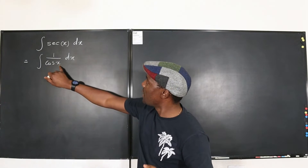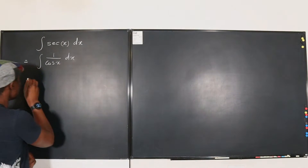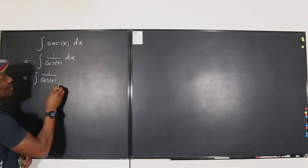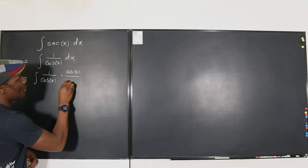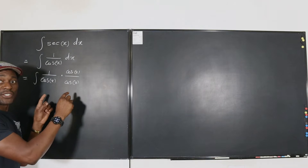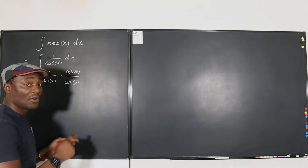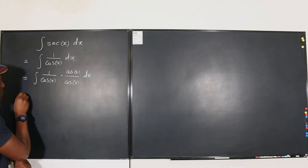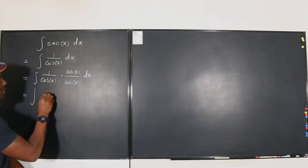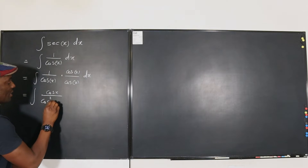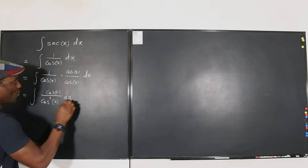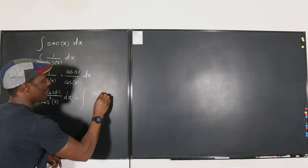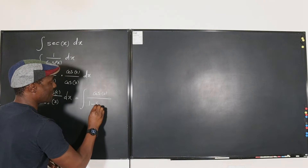What if we multiply the top and bottom by cosine x? So we write this as the integral of 1 over cosine x, multiplied by cosine x over cosine x. This is a trick in integration you might need to employ in other problems, especially involving trig. What you have here is the integral of cosine x over cosine squared x — and you know that cosine squared x is the same thing as 1 minus sine squared x. So we can write this as the integral of cosine x over 1 minus sine squared x, dx.